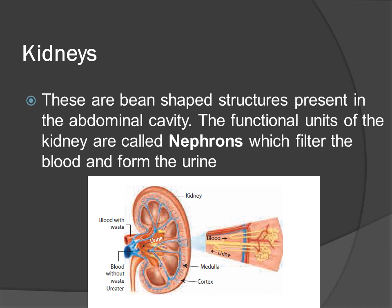Kidneys are bean-shaped structures present in the abdominal cavity. The functional units of the kidney are called nephrons, which filter the blood and form the urine. Key kidney structures include the medulla and cortex.